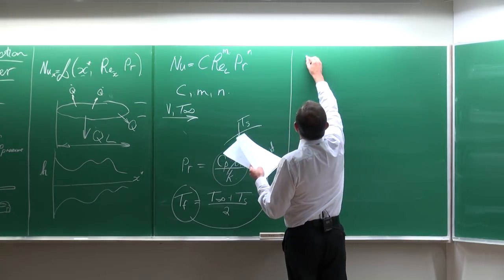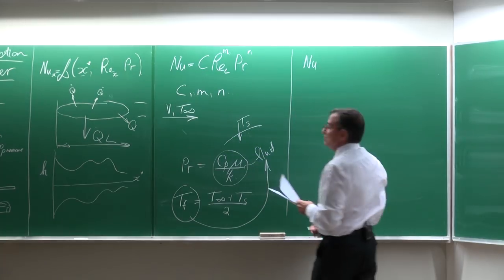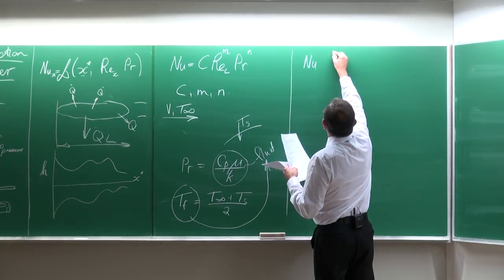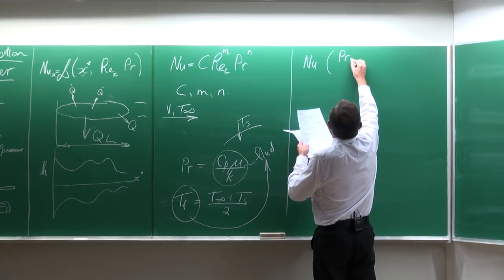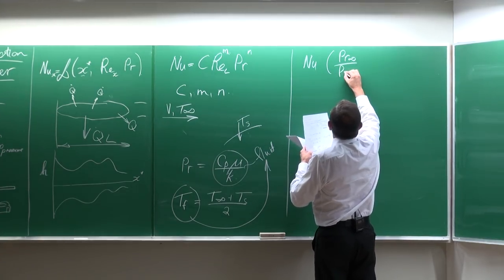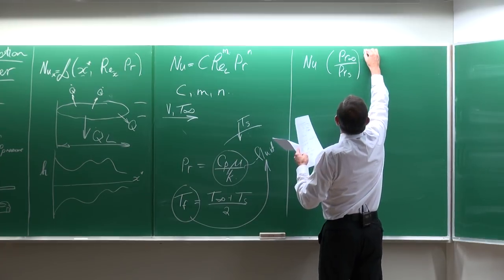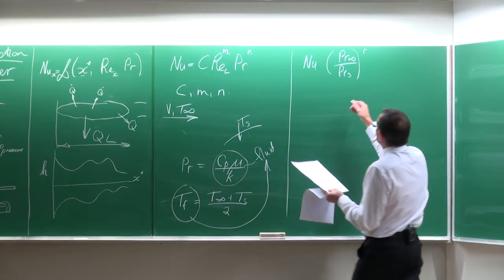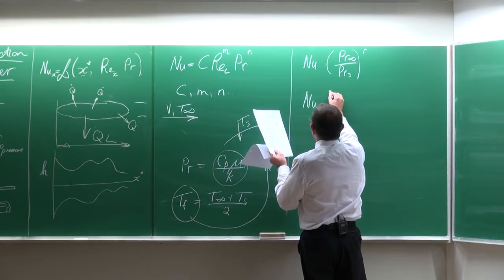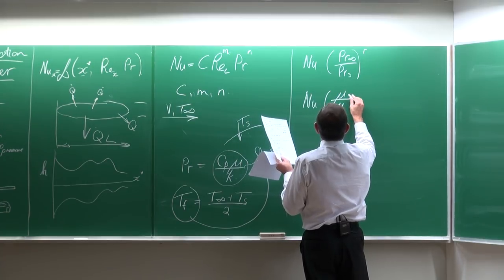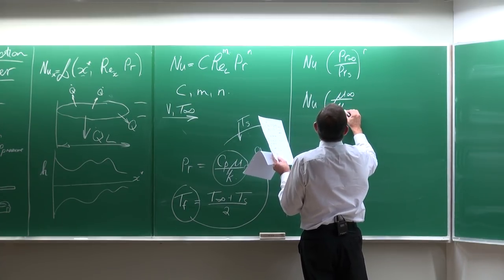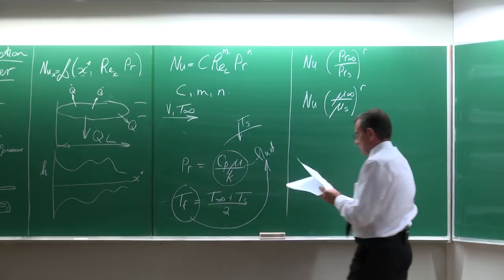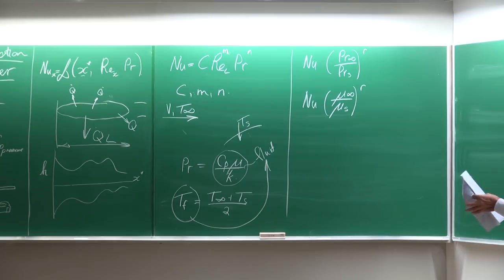The other, more sophisticated way — which we are not going to use — is to take the Nusselt number and multiply it by the ratio of Prandtl at free stream to Prandtl at the wall to the power R. Alternatively, you can multiply the Nusselt number by the viscosity ratio of the free stream divided by the surface value to the power R. These are modifications used in heat transfer to account for changes in properties.